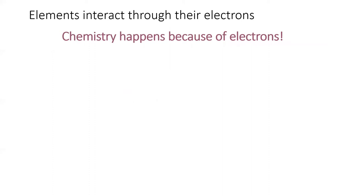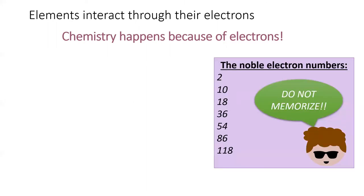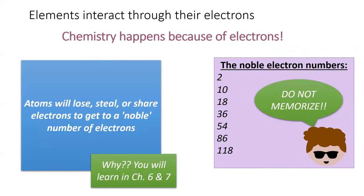Continuing on. The movement of electrons is a fundamental part of chemical reactions. Here's a helpful way to think of it. There are certain magic numbers of electrons that I will call the noble numbers. Elements have extra stability if they have a noble number of electrons. The reason will be revealed to you in chapters 6 and 7. But for now, just imagine that each of the elements wants to lose, steal, or share electrons until they have one of these seven noble numbers.